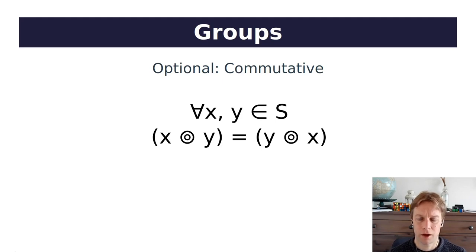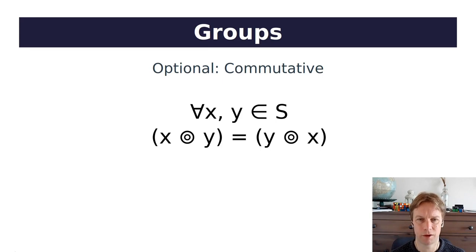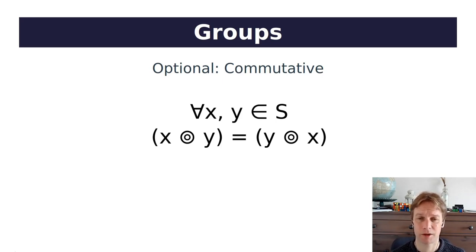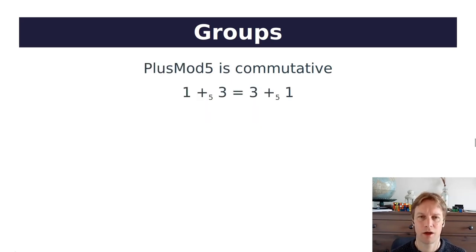There's another rule which is optional — there are groups that don't follow this rule. Some groups follow the rule that for all x and y in S, x dot y equals y dot x. So it doesn't matter which way around you write them in the operation. If a group follows that rule, we call it commutative, or if you want to sound really posh, abelian. But not all groups are commutative or abelian. Is plus mod 5 commutative? Yes, because 1 plus 3 is the same as 3 plus 1. Simple as that. So plus mod 5 is a commutative group.